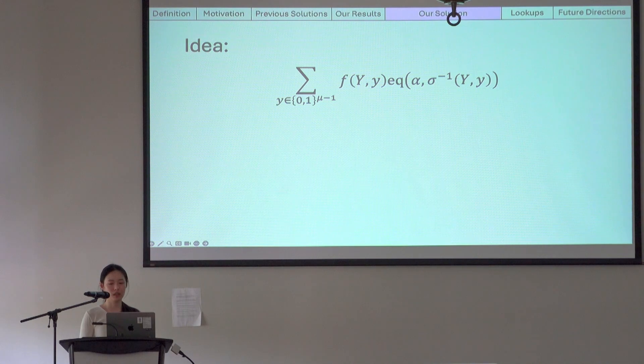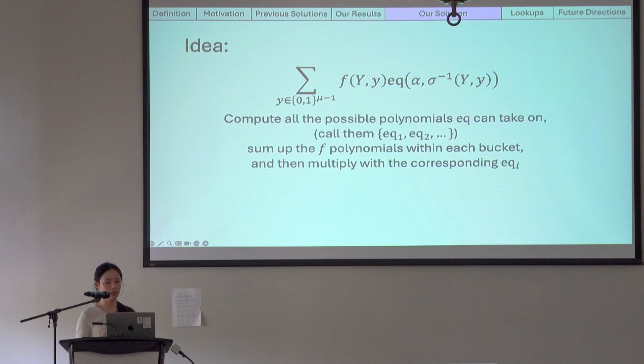This is where Hyperplonk stopped in 2022, and we will continue. So our idea is that take the first round of sum check, for example. We could compute all the possible polynomials EQ can take on. So suppose we call them EQ1, EQ2, etc. We can flip the sum.